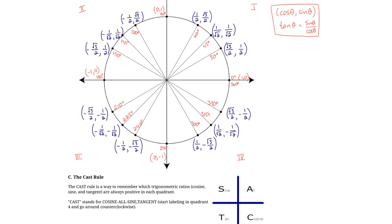Finally, in the third quadrant, tangent is the only positive ratio. Our x-coordinates (cosine) and y-coordinates (sine) are all negative. Tan = sin/cos = negative/negative = positive, so tangent is always positive in the third quadrant. That's the unit circle and the CAST rule. You may need to re-watch this without distractions, but understanding the unit circle and applying the CAST rule is essential. In the next video we'll work on examples to reinforce this understanding.